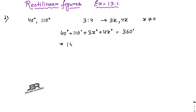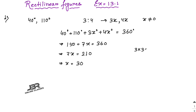So 150 + 7x = 360, therefore 7x = 210, giving x = 30. The third angle is 3 × 30 = 90°, and the fourth angle is 4 × 30 = 120°.